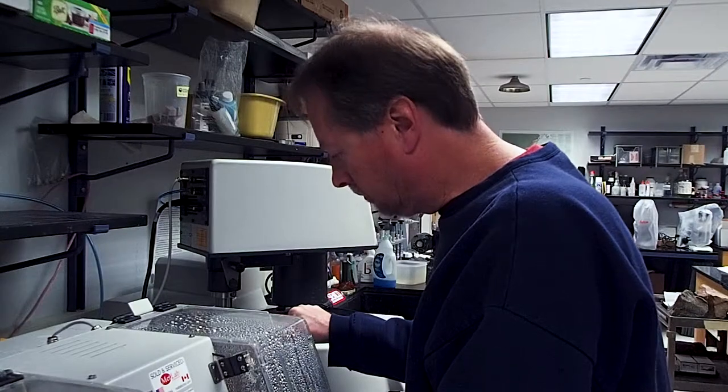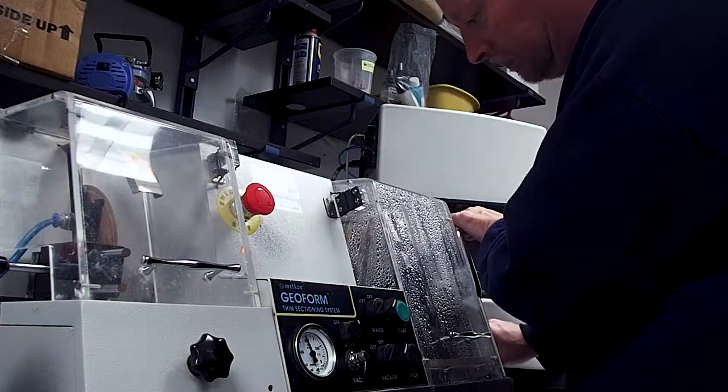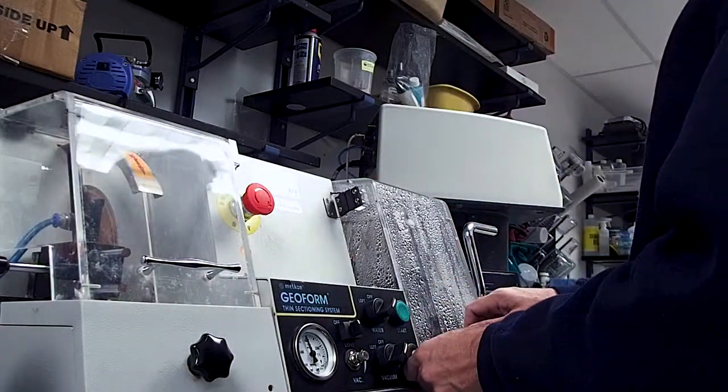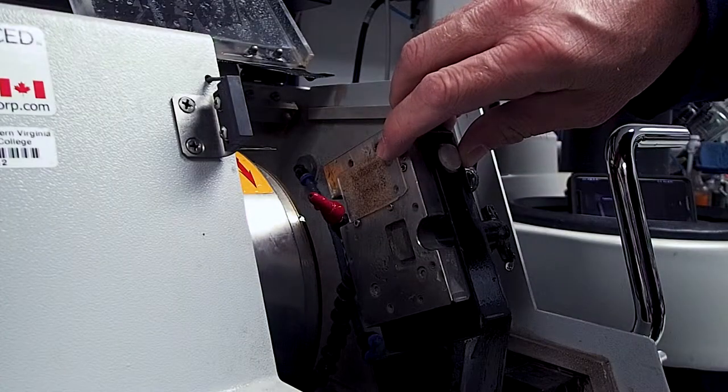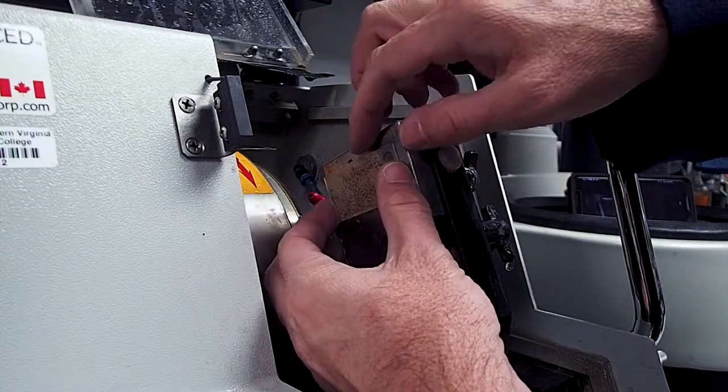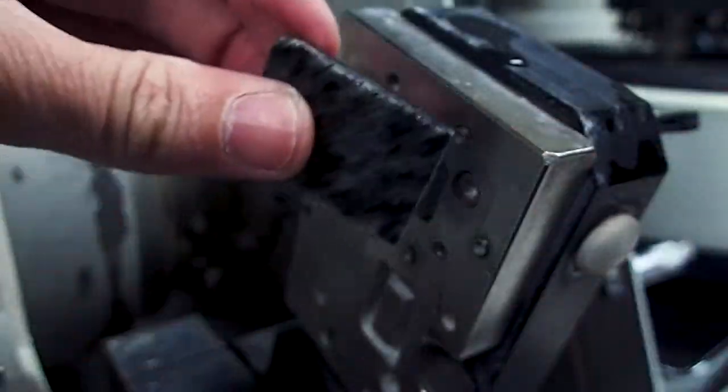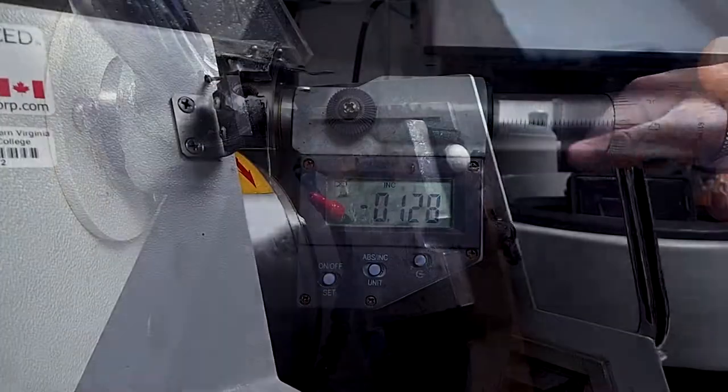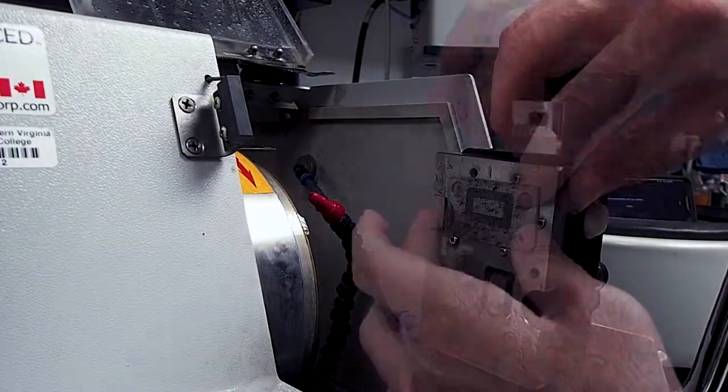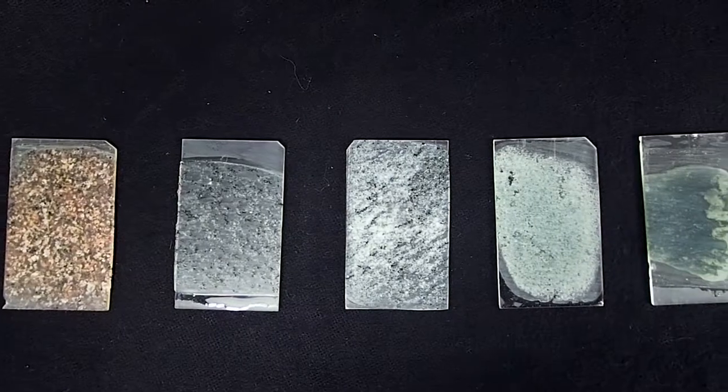Once your sample has been ground down to a thickness of 100 microns or less, it is time to pull the slide from the equipment. Using the side arm, carefully move the sample away from the grinding wheel before turning it and the water flow off. Make sure you have a grip on your slide before turning off the vacuum and carefully pull it from the vacuum chuck. If you have additional samples to grind, simply repeat this process for each one. Once all of your samples have been ground down to a thickness approaching 30 microns, they are now ready for the final grinding stage using glass plates and powdered grit.